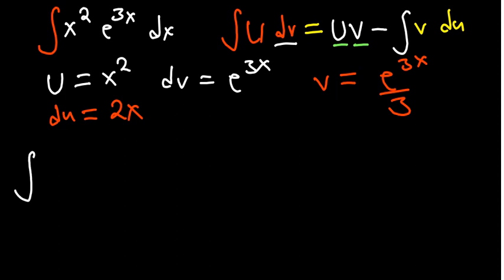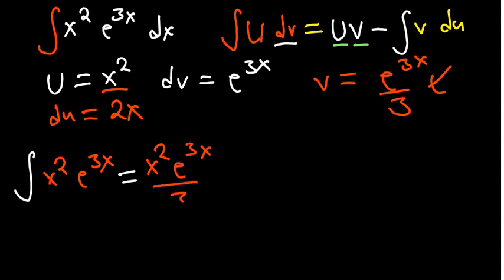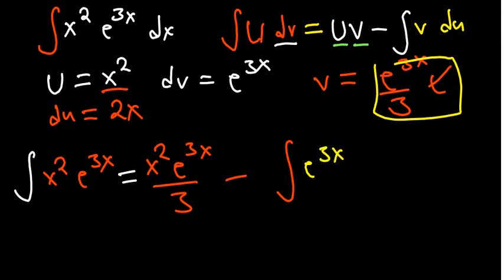We now have every piece of information needed to substitute into the formula. The integral of x squared e to the power 3x equals u times v, which is x squared times e to the power 3x over 3, minus the integral of v du.